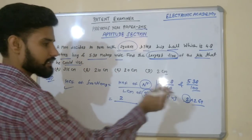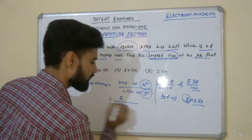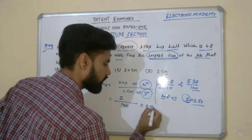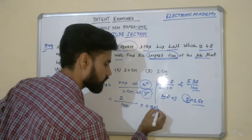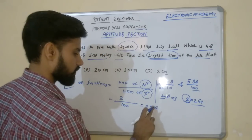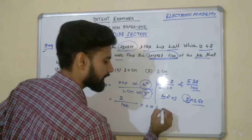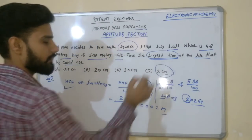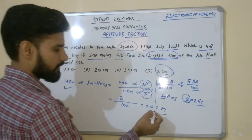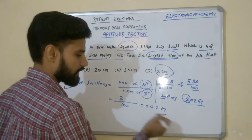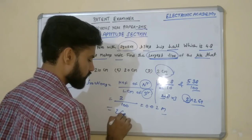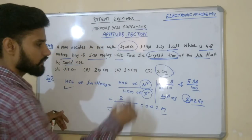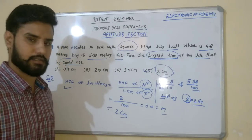The LCM of the denominator — that is LCM of 100 — is 100. That's why it can be written as 2/100, which is 0.02 meter. But the option is provided in centimeters, so we convert: 0.02 meter × 100 = 2 centimeters. So option D is the correct answer.